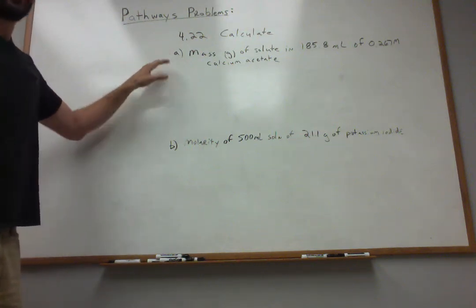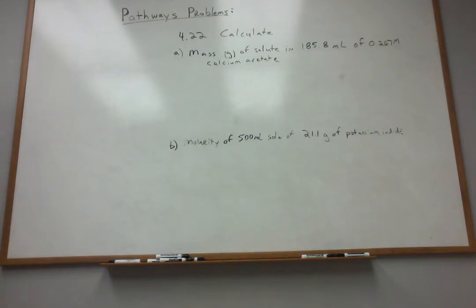All right, let's go ahead and work 4.22. This problem asks us to calculate several different things. The first one in part A is the mass in grams of the solute that is present in 185.8 milliliters of 0.267 molar calcium acetate.